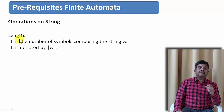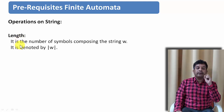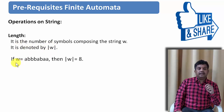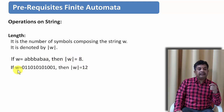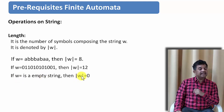The next operation is length. It is the number of symbols a particular string or word contains, and it is denoted by the mod symbol. For example, if w is 'abbbaba', then the string length is 8. If I take a string over alphabet 0 and 1, and this string has length 12. As I have already told, if w is an empty string its length is 0.